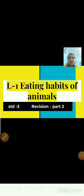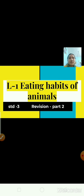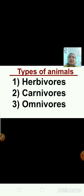Hello everyone. In the last science session we had done the revision of lesson number 1, that is eating habits of animals. In the previous class you had learnt about types of animals depending on their eating habits. So children, tell me how many types of animals are there depending on their eating habits?